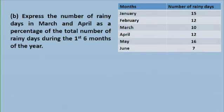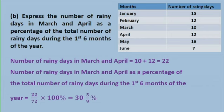Part B: express the number of rainy days in March and April as a percentage of the total number of rainy days during the first six months. In March and April, I have 10 plus 12, that is 22 rainy days. The percentage is 22 over 72 times 100%, which gives 35 over 9 percent.